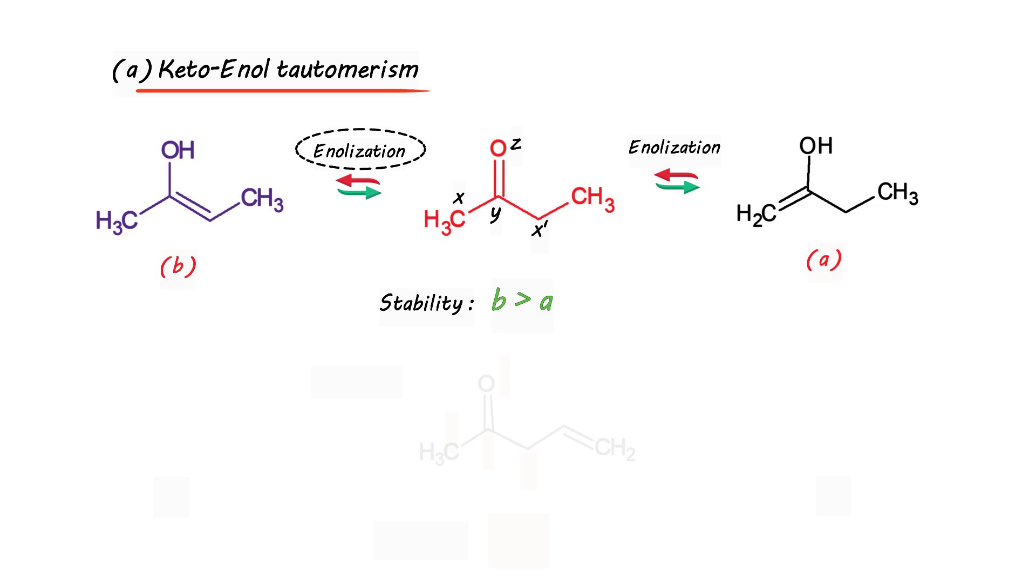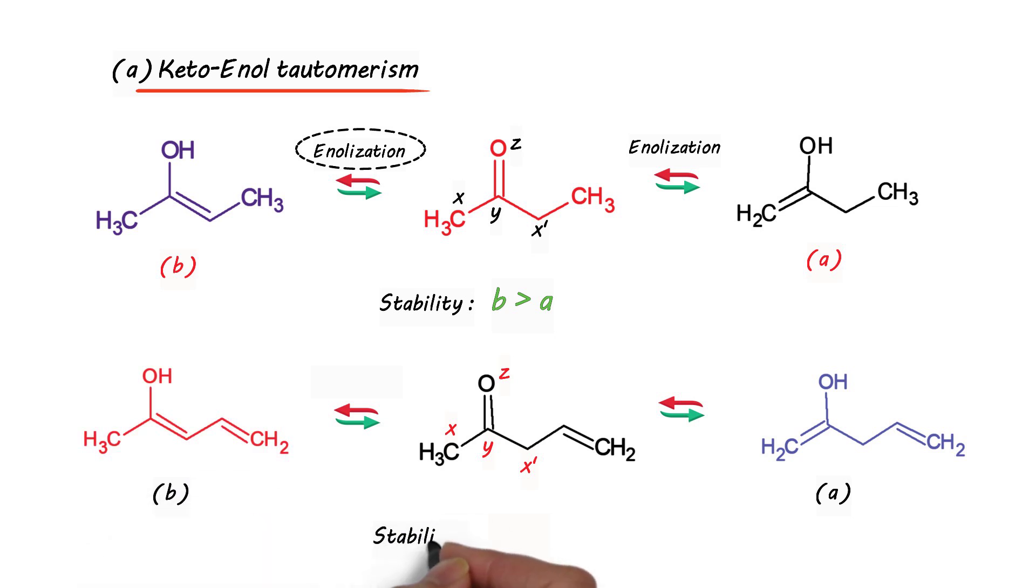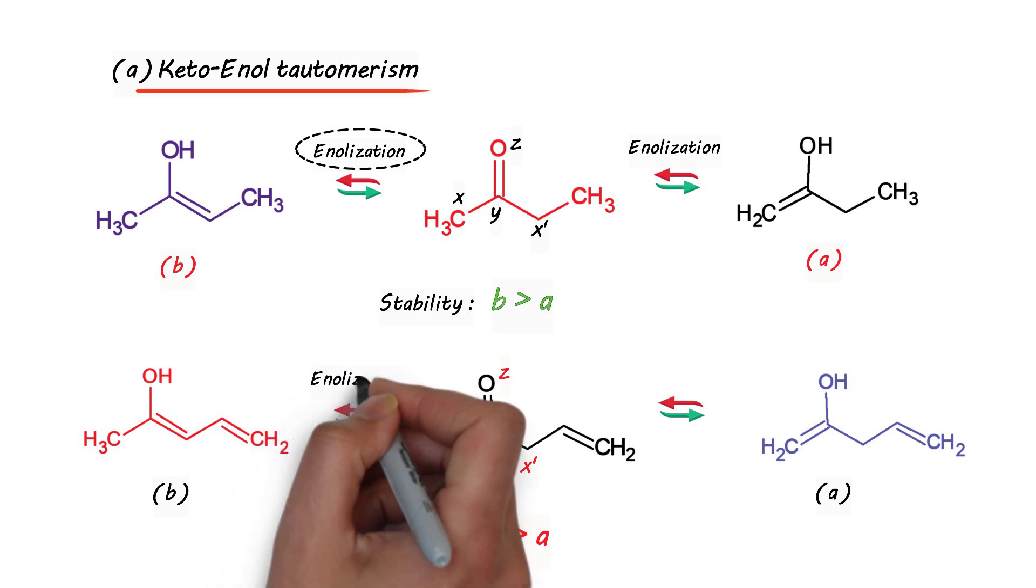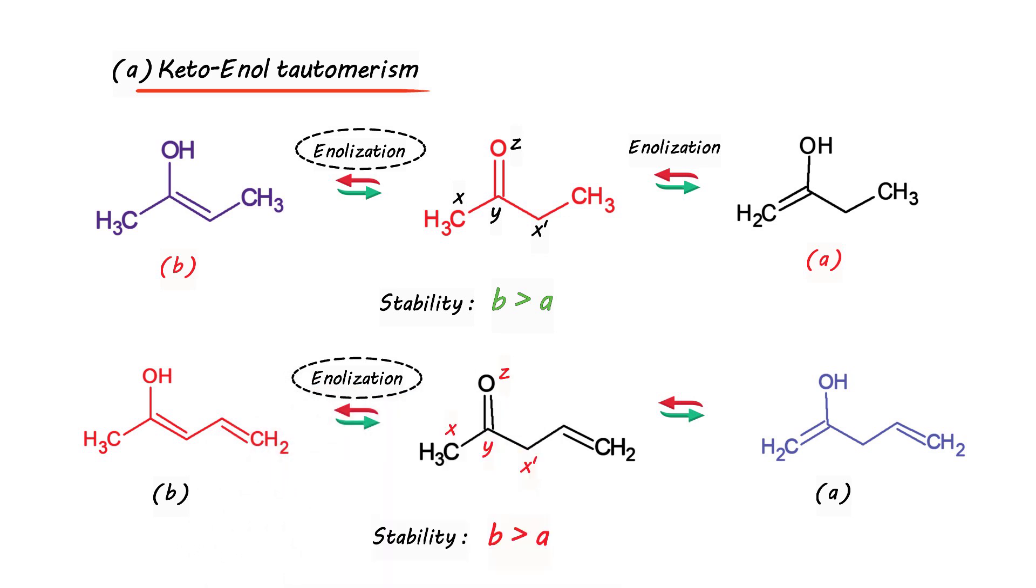Similarly, talking about the next example, in this case also it does have a structural feature X, Y, and Z. Clearly X is sp3 hybridized and hydrogen is attached to it that will migrate to oxygen giving rise to tautomer A. In the same way, hydrogen from X' can migrate to oxygen to give tautomer B. Now on comparing A with B, B will be more stable compared to A because it involves conjugation. So clearly enolization with respect to B is faster compared to that of A.